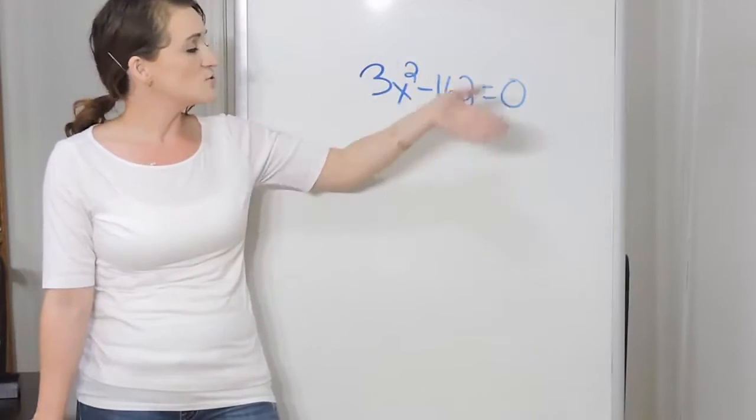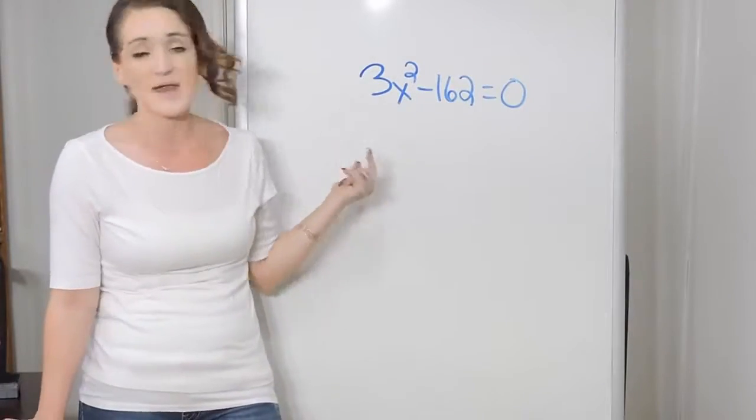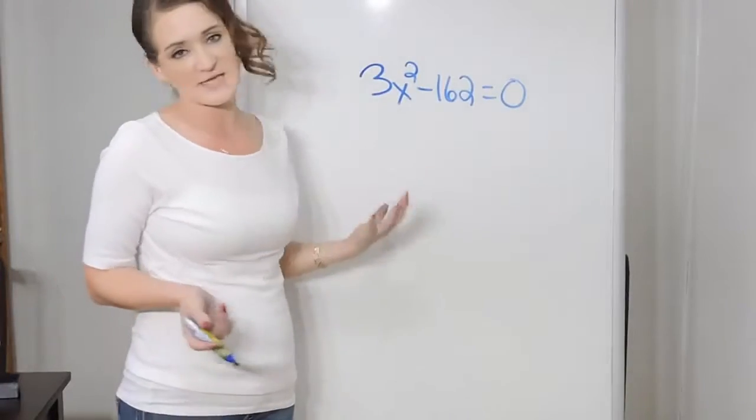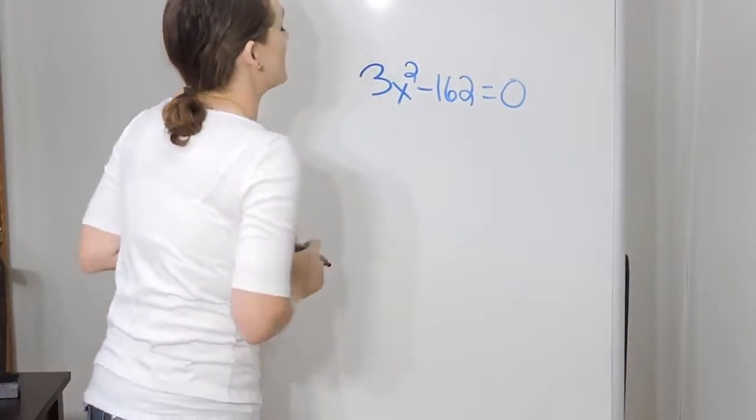but sometimes you can just use the square root property to solve it. That's essentially just doing the opposite, solving your equation for x by trying to get x all by itself. So let's work on trying to see, can we get x all by itself? Is it going to be solvable using this method here?